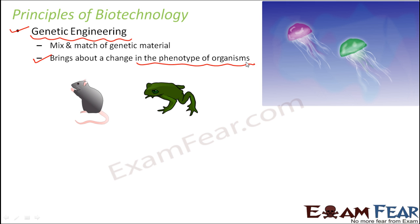Whenever we try to do genetic engineering, the motto is to bring about a change in the phenotype — a change in the look or display of that organism. When the frog or mouse starts to glow, that is a change in the phenotype: something observable, something we are able to see. These kinds of changes are the result of genetic engineering. This is the first principle of biotechnology — mixing and matching of genes between different living organisms.